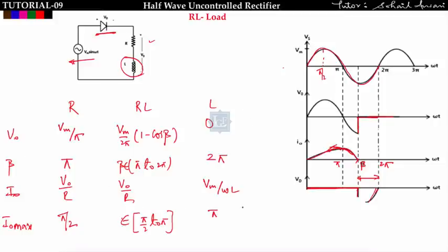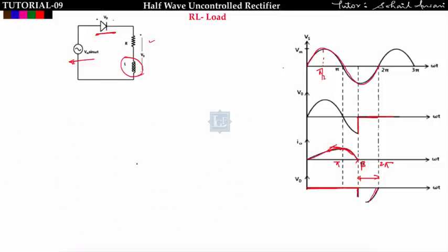Up to now we have seen the discontinuous conduction mode — the current is discontinuous for R load (current up to π) and for RL load (current up to beta). To make the current continuous, beta must shift up to 2π. If beta shifts to 2π, we can obtain continuous current. So how do we make beta extend to 2π or beyond?